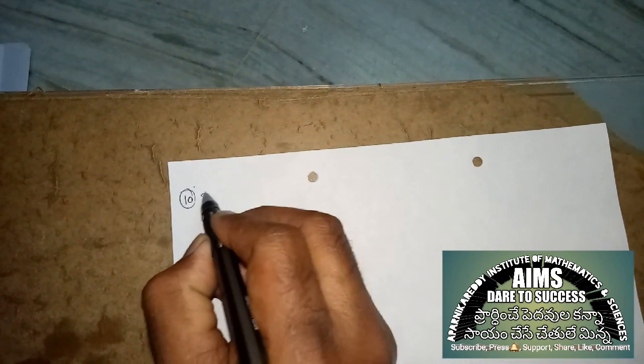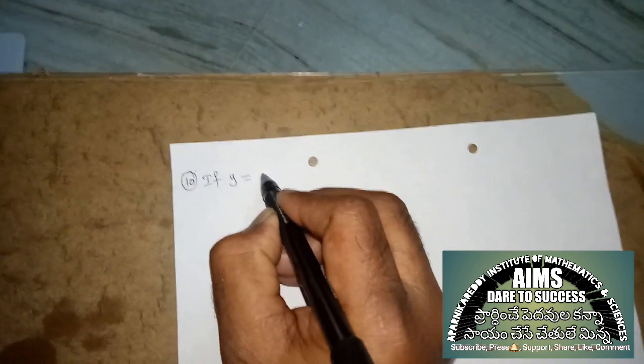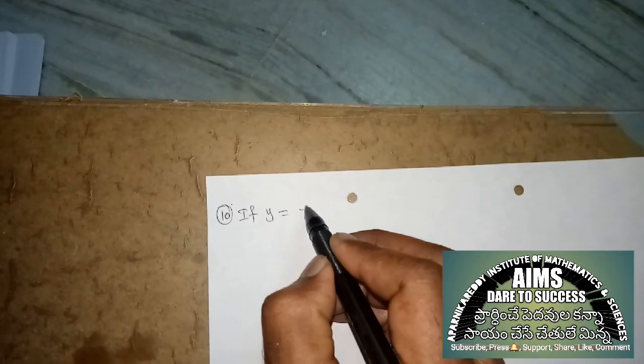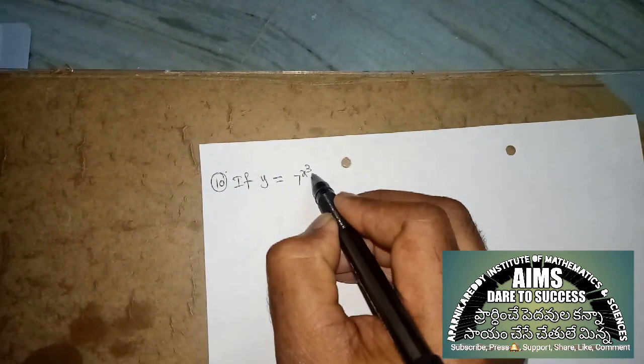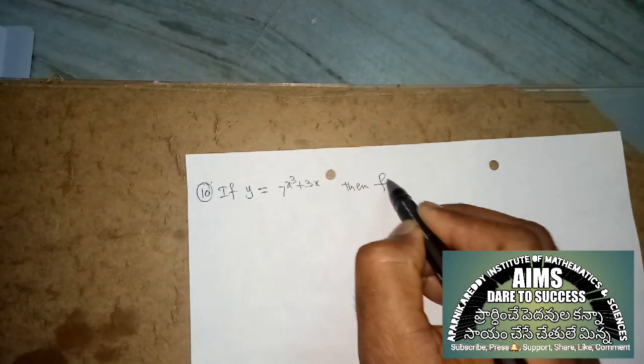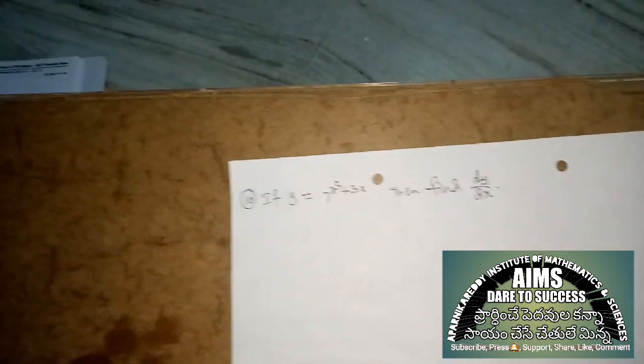The two marks question is: If y is equal to 7 power (x cube plus 3x), then find dy by dx.